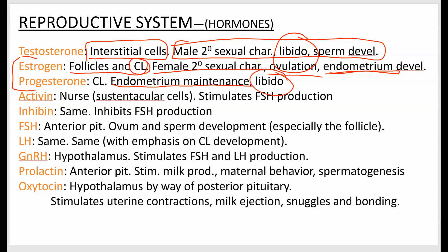Progesterone is also why female sexual interest often increases after ovulation. Activin and inhibin are both made in the sustenticular cells of the testes and also in the ovaries. Activin stimulates follicle-stimulating hormone (FSH) production, while inhibin inhibits it.